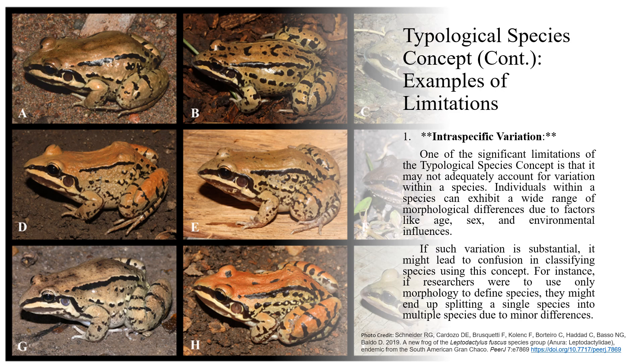Another limitation is intraspecific variation, one of the most significant limitations of this concept. It may not adequately account for variation within a species. Individuals within a species can exhibit a wide range of morphological differences due to factors like age, sex, and environmental influences. If such variation is substantial, it might lead to confusion in classifying species using this concept. For instance, researchers using only morphological traits might end up splitting a single species into multiple species due to minor differences.